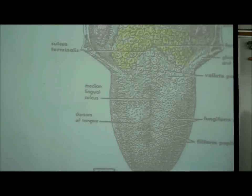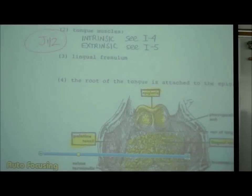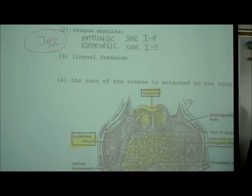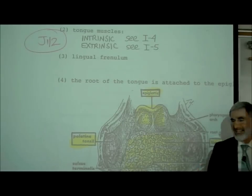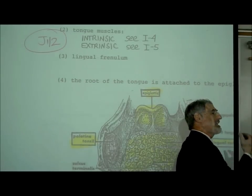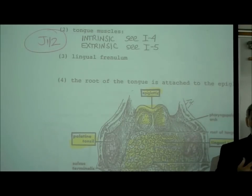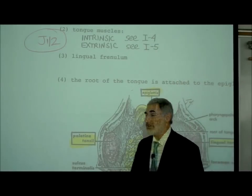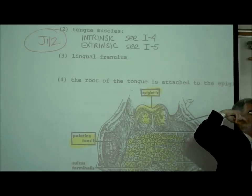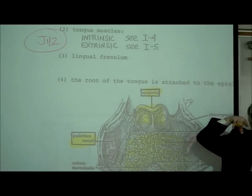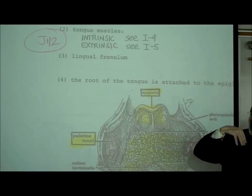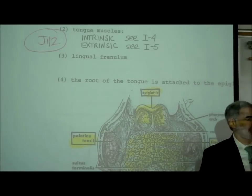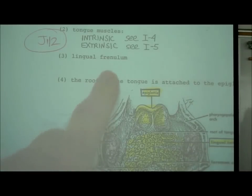On J12, we are reminded that our tongue is controlled by both intrinsic muscles and extrinsic muscles. The word intrinsic means inside, so intrinsic muscles are inside the tongue. Extrinsic muscles originate outside the tongue, such as the genioglossus and styloglossus, which stick our tongue out and retract it back in.